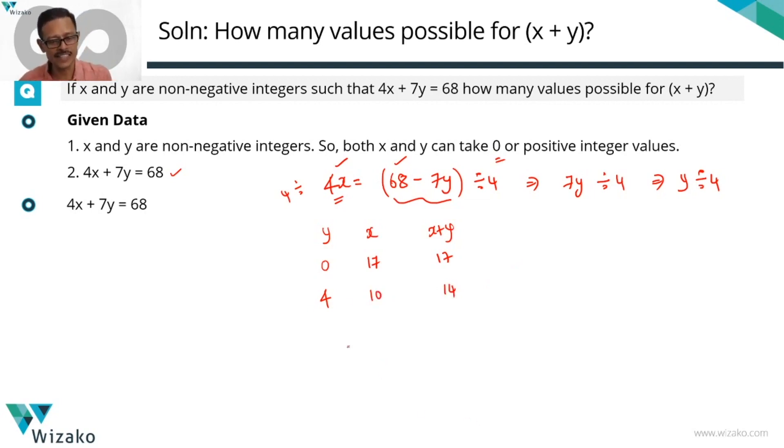The next value that y can take is 8. y is 8. 68 minus 7 times 8 which is 56. 68 minus 56. 4x is equal to 12. So x equals 3. Look at it. y goes in steps of 4.